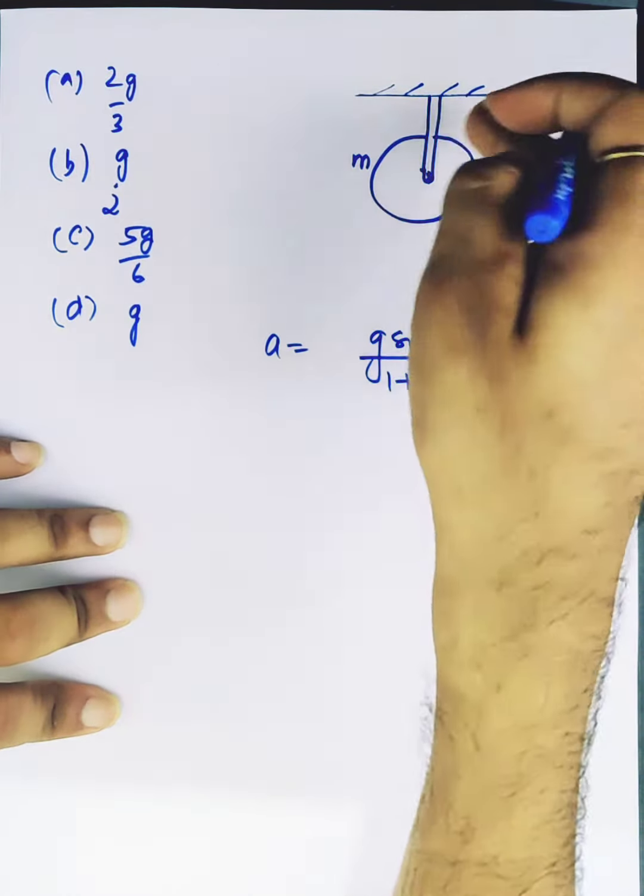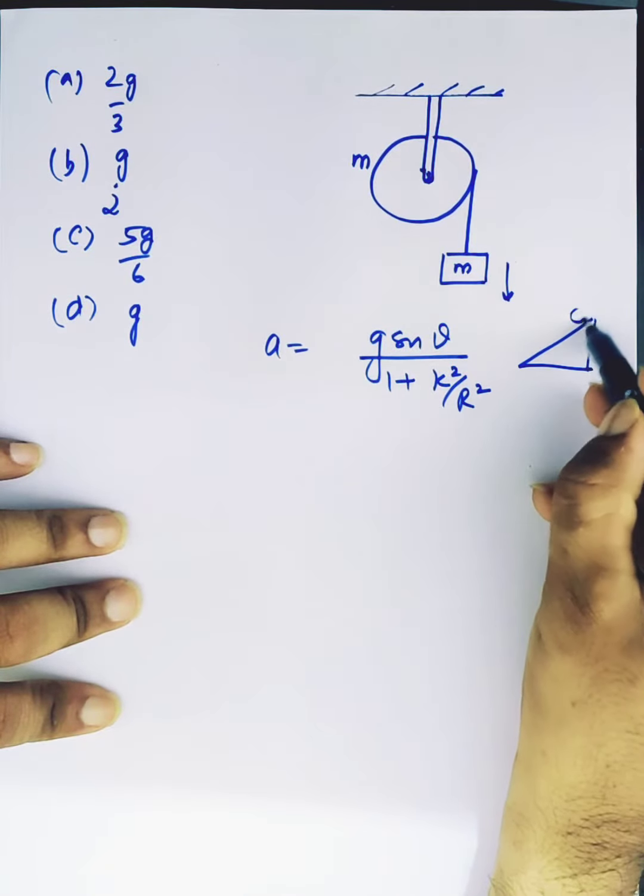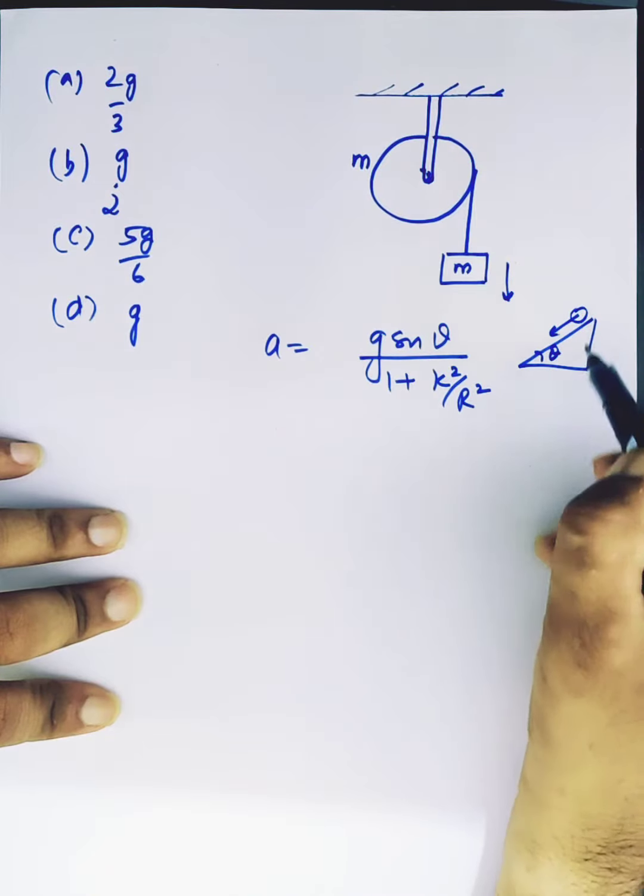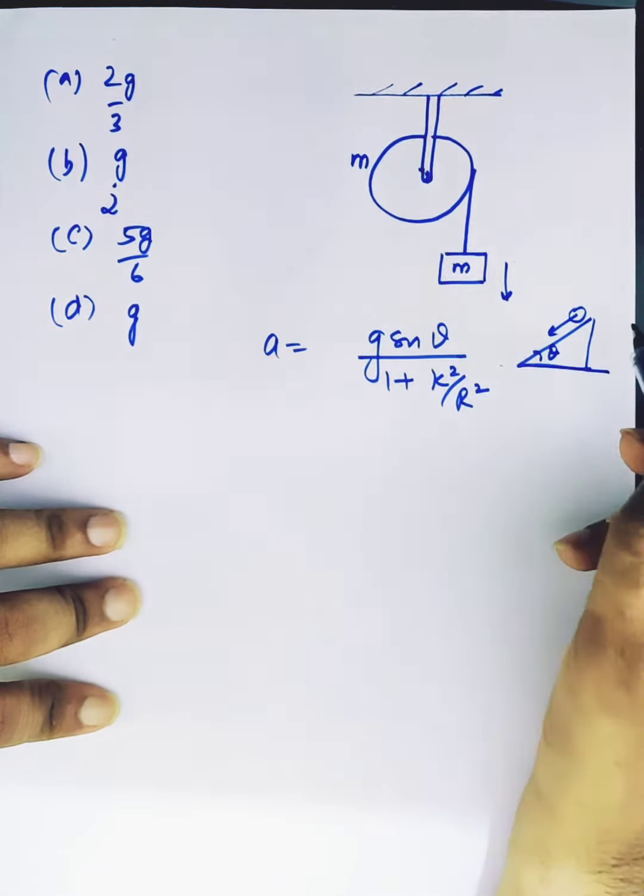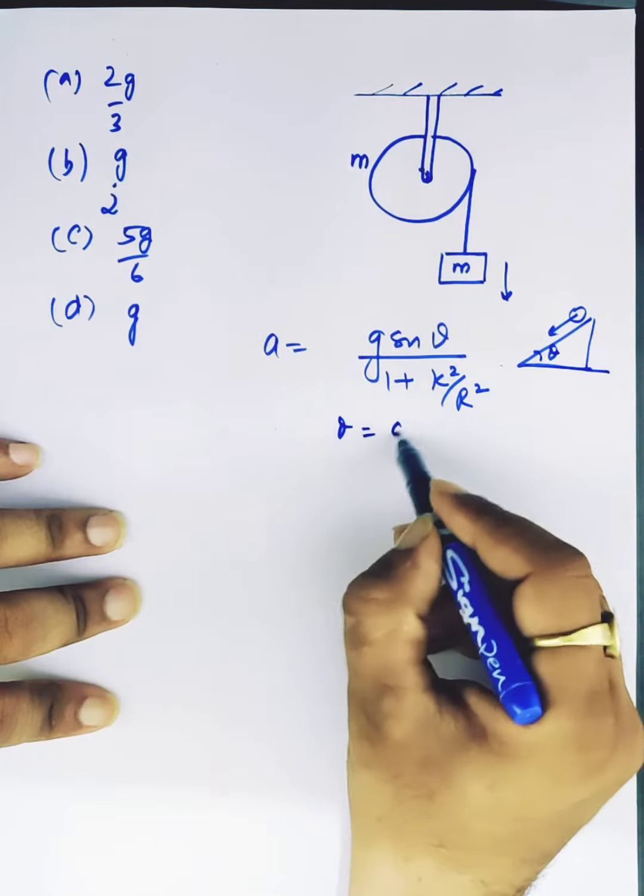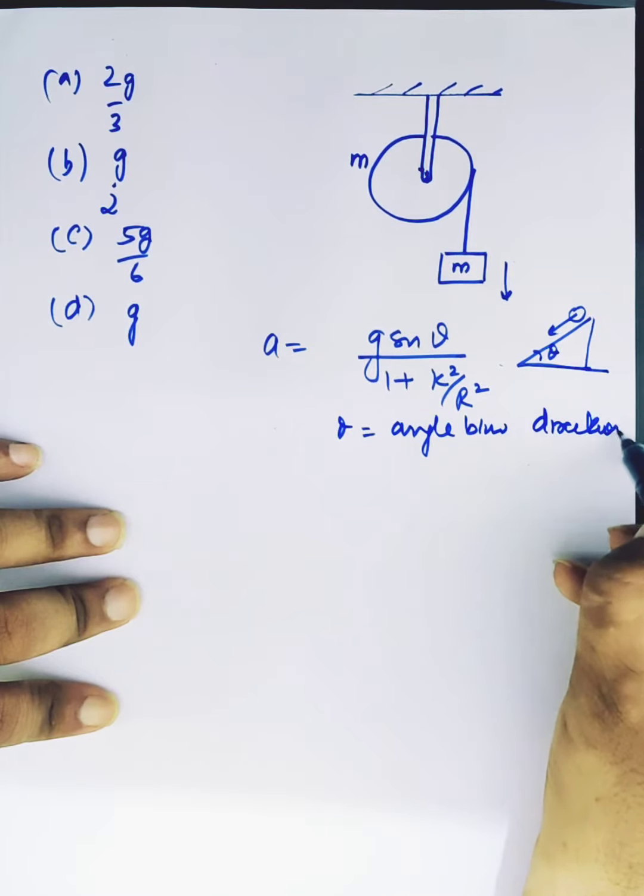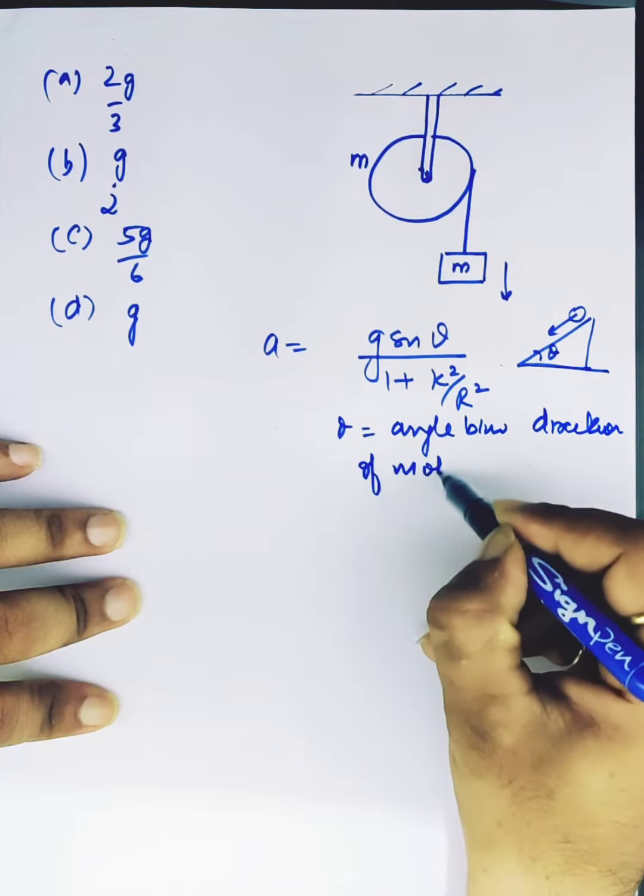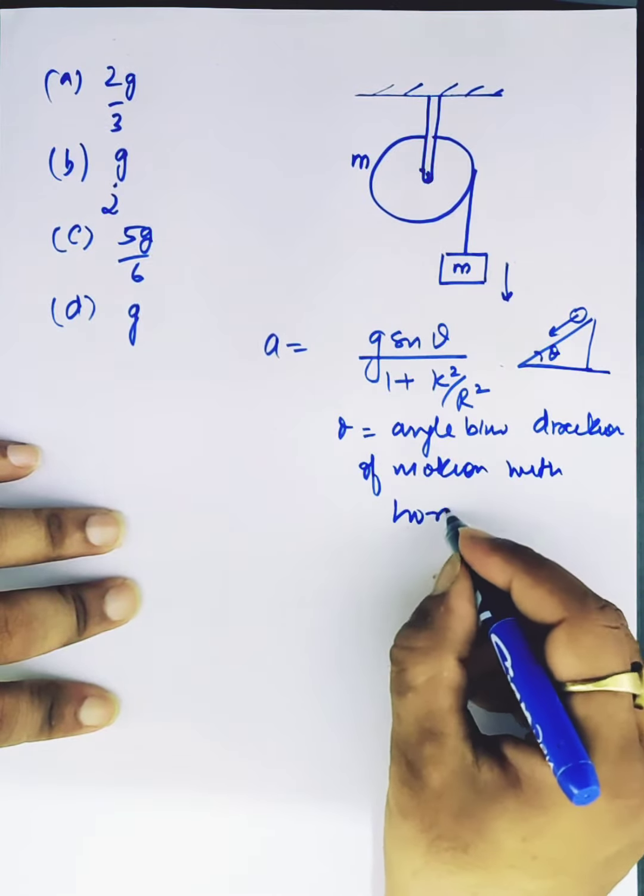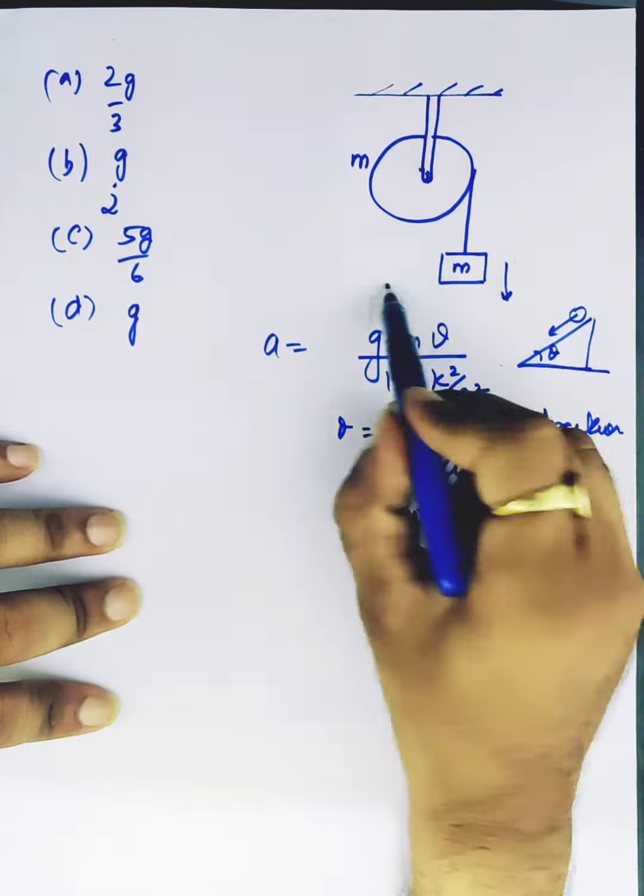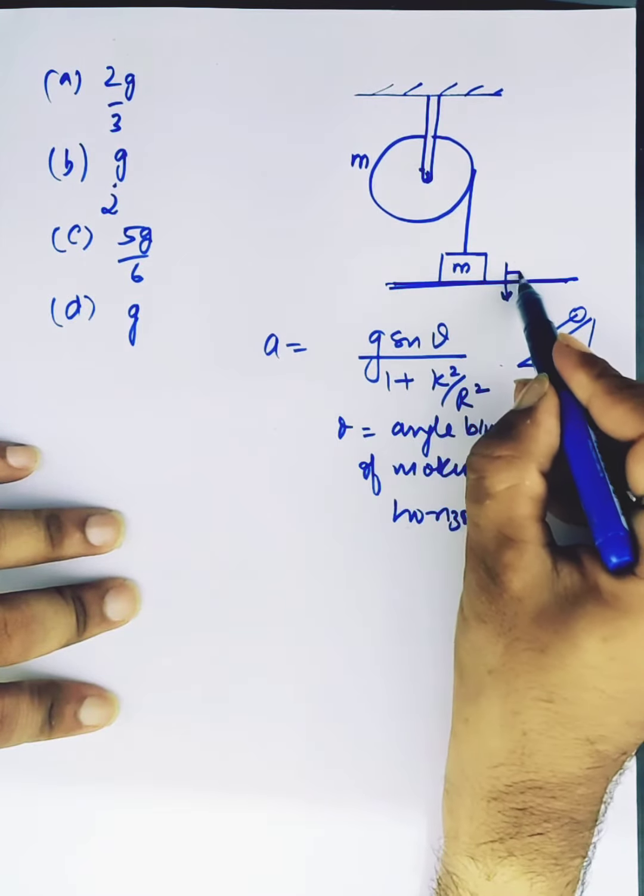And in this case, because it is vertical, this is normally a formula for inclined plane for rolling body. So what is the angle between the direction of motion and the horizontal? We can see the direction of motion is vertical, so it is making 90 degrees with the horizontal.